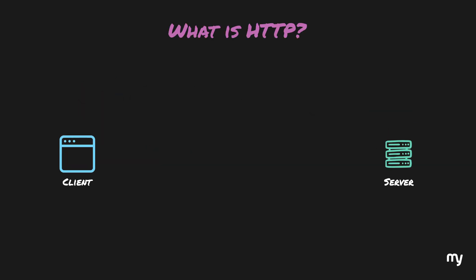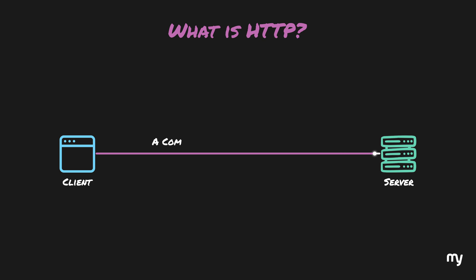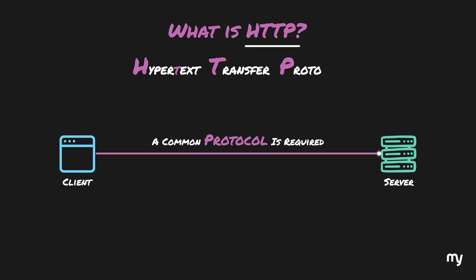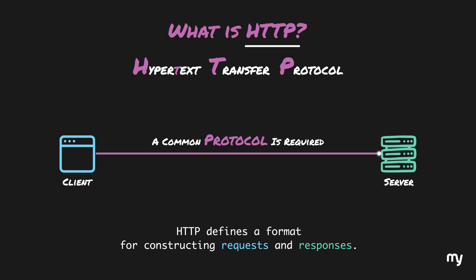Similarly, for a client and the server to communicate with each other, a common protocol is required. One such protocol that systems can use is called HTTP, which stands for Hypertext Transfer Protocol. HTTP does a bunch of stuff, and one of the most important things it does is define the format for constructing requests and responses so that the client and server can understand each other. This is very similar to how English grammar defines the format for framing sentences. So if you choose HTTP as your communication protocol, you have to create your requests and responses using the rules of HTTP for the communication to happen.